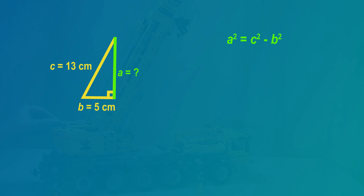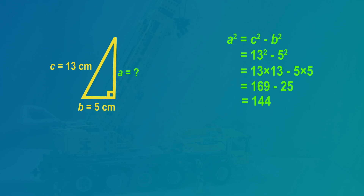In this toy crane, C equals 13 and B equals 5. That's 13 times 13 minus 5 times 5, which is 169 minus 25. So A squared equals 144. And then we square root 144 to find A. The length of the small side of this toy crane is 12 centimeters.